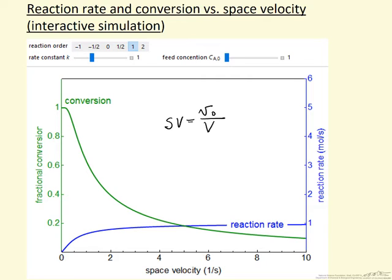So what we notice for first order reaction, if the space velocity is very low, then the conversion is very high. Essentially everything we feed into the reactor is converted, but the reaction rate is low because we don't have very much material to react. So this reaction rate is the total rate that we're making product in the reactor.